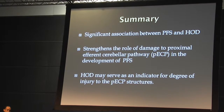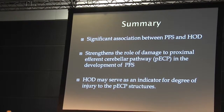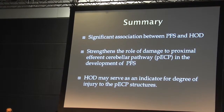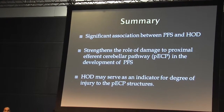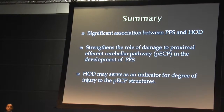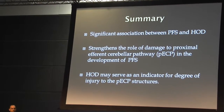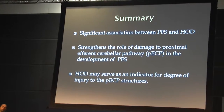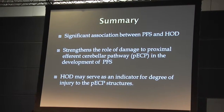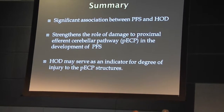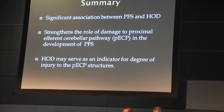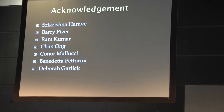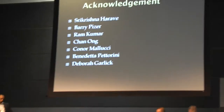To summarize: there is a significant association between posterior fossa syndrome and hypertrophic olivary degeneration. It may not change management because it happens down the line, but we are gathering more evidence about this mysterious condition. This strengthens the role of damage to the proximal efferent cerebellar pathway in the development of posterior fossa syndrome, and may serve in the future as an indicator of the degree of injury to those structures. Some patients with posterior fossa syndrome did not have this finding, so we may be looking at a spectrum of insults affecting this pathway. I'd like to acknowledge all my colleagues who helped me, and I'm happy to take any questions. Thank you.